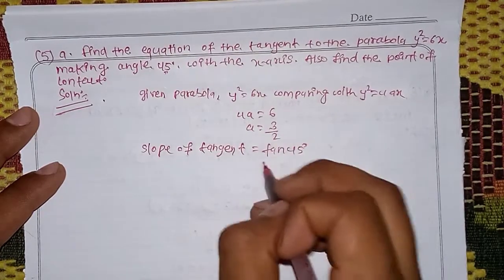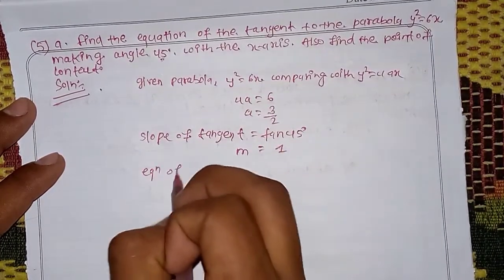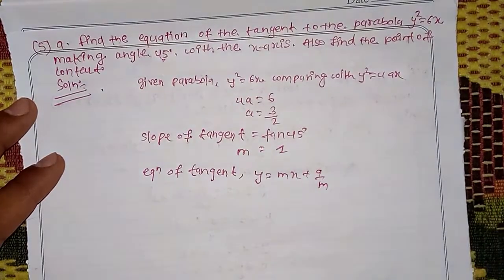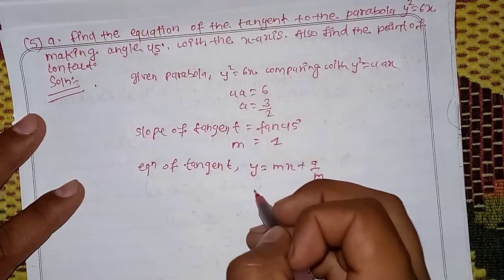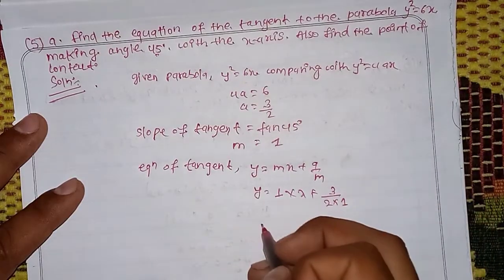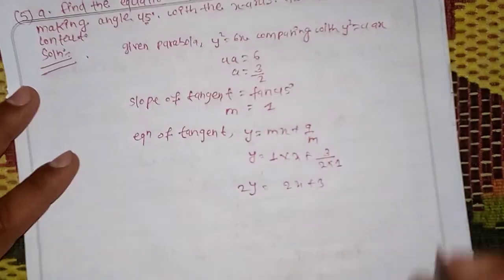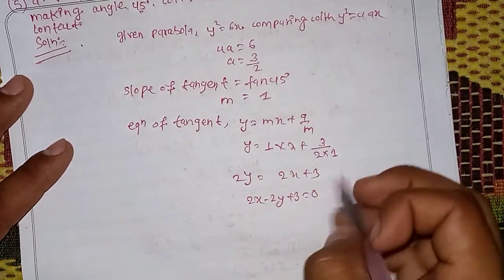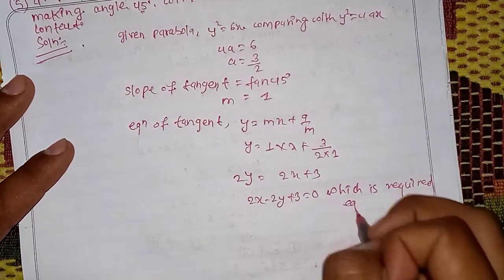The equation of the tangent is y = mx + a/m, giving y = 1·x + (3/2)/1, so y = x + 3/2, hence 2y = 2x + 3, or 2y - 2x - 3 = 0. This is the required tangent equation.